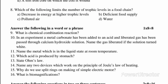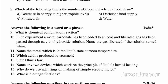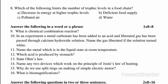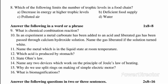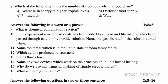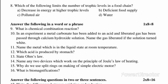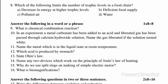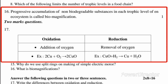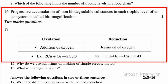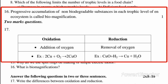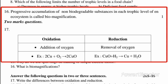Question 14: Name any two devices which work on the principle of Joule's Law of Heating. Answer: Electric iron box and electric heater work on the principles of Joule's Law. Question 15: Why do we use split rings in making a simple electric motor? Answer: Because they act as a commutator. Question 16: What is biomagnification? Answer: Progressive accumulation of non-biodegradable substances in each trophic level of an ecosystem is called biomagnification.